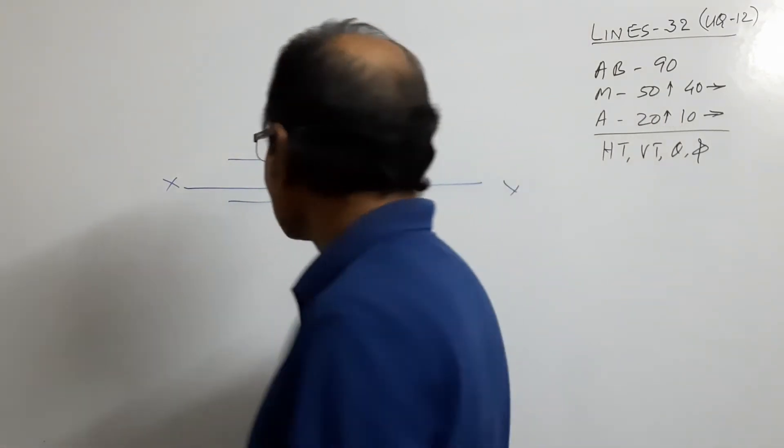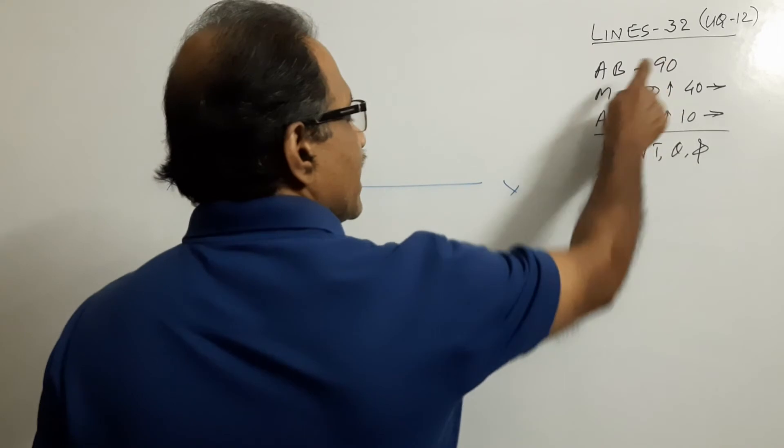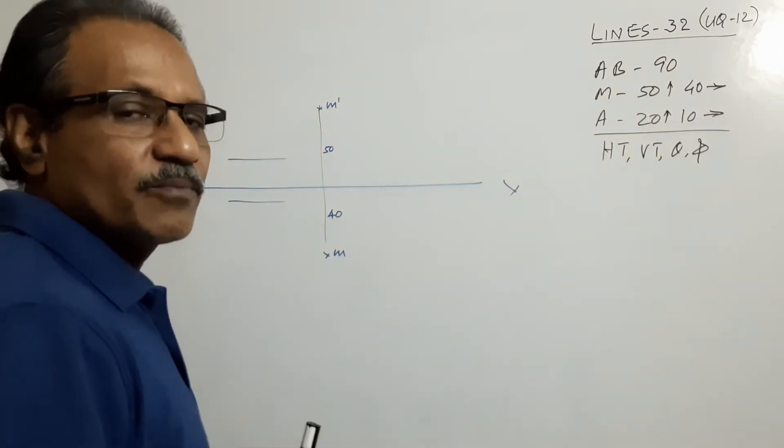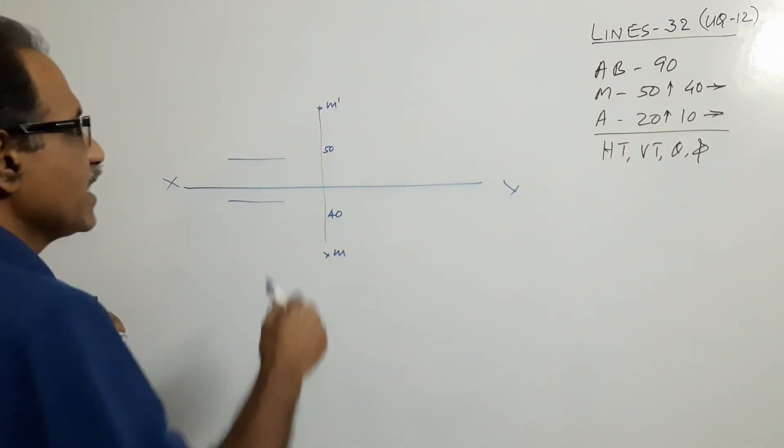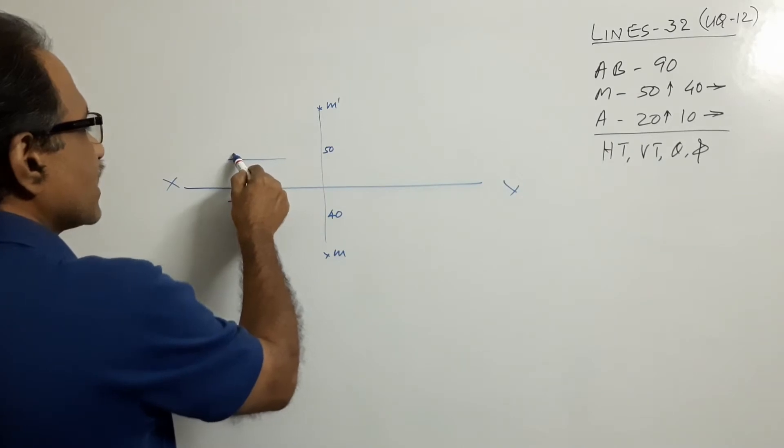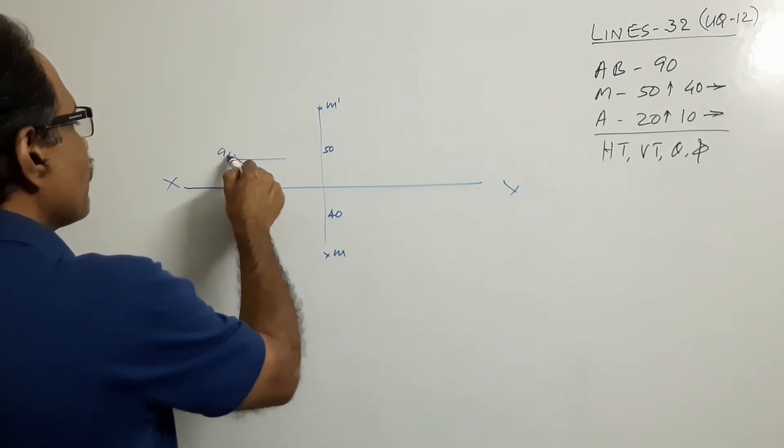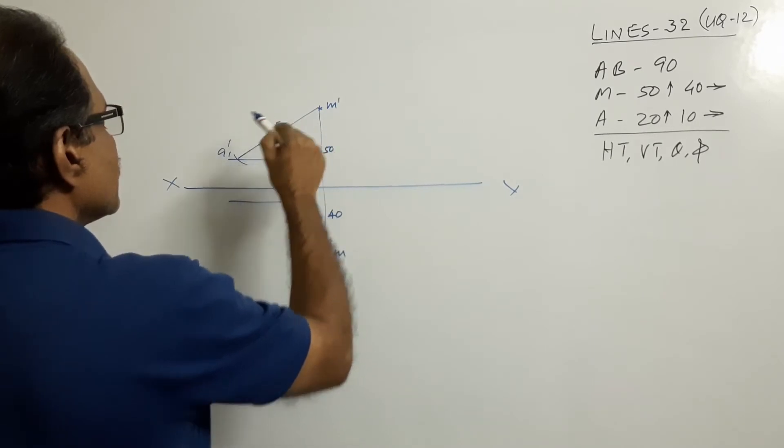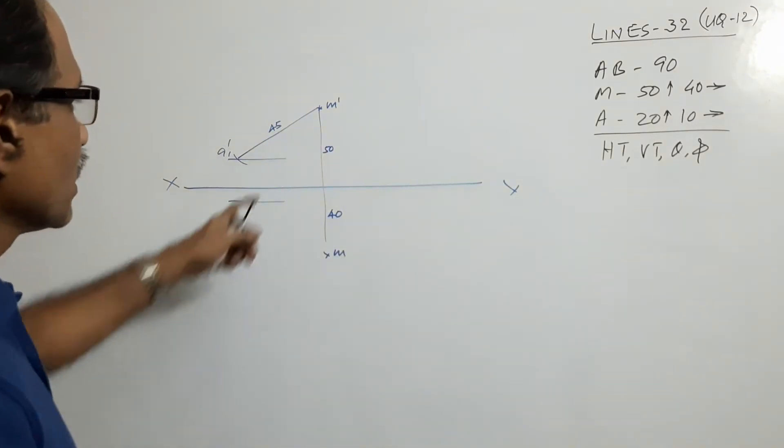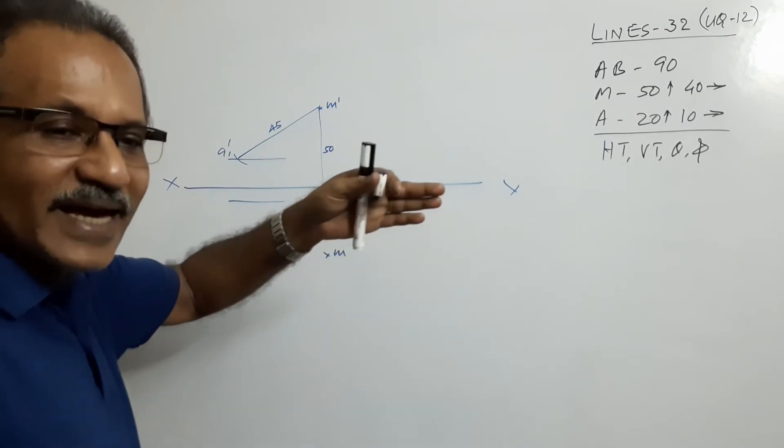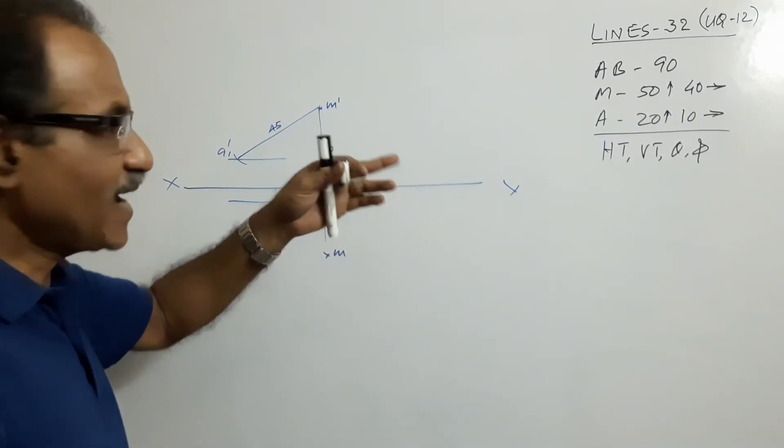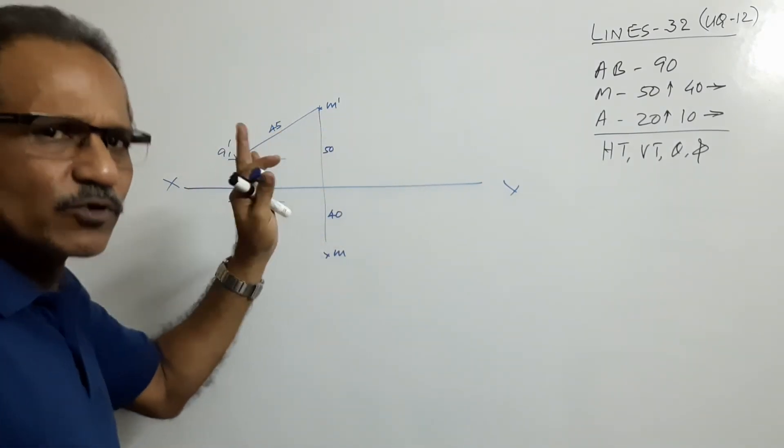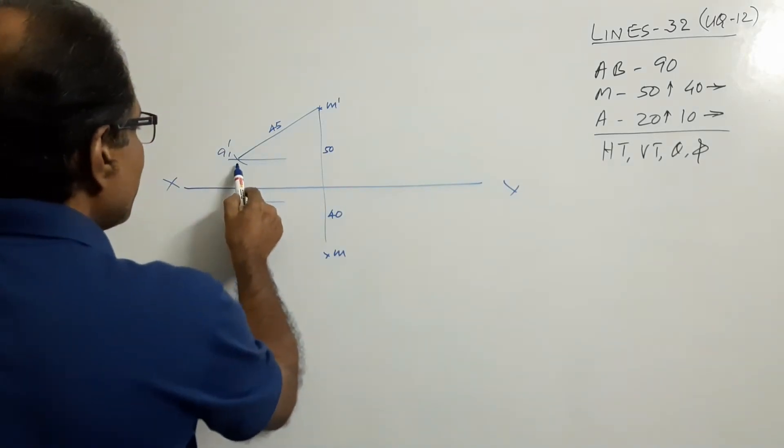AB 90, true length, half 45. M dash center, 45 as radius, cut an arc A1 dash. The line is kept parallel to VP. We have assumed the line is parallel to VP and we have drawn the elevation as true length, half true length. If this is A1 dash...